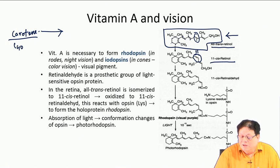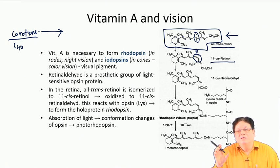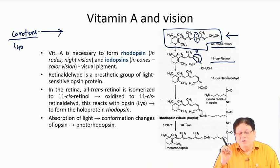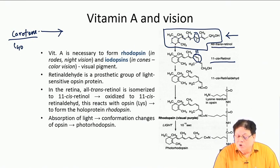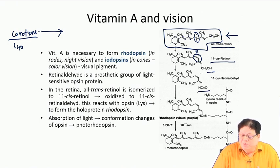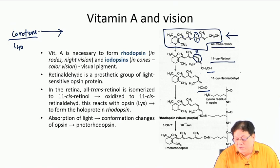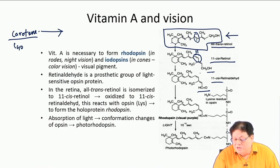This 11-cis retinol is oxidized by retinol dehydrogenase — a redox enzyme — which oxidizes the –CH₂OH to –CHO. So that becomes 11-cis retinal ('al' meaning aldehyde).